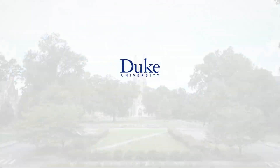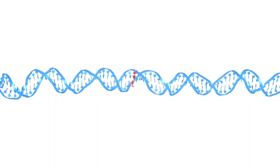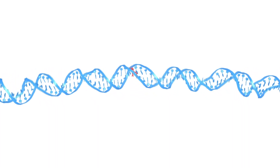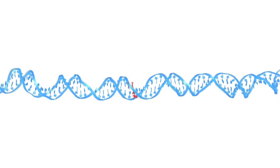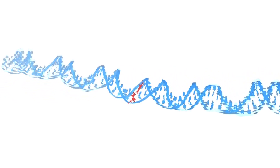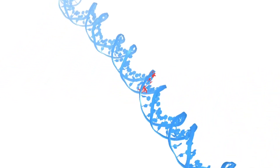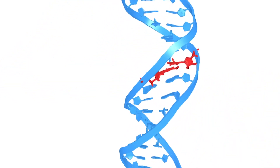This is Duke University. Duke researchers have found what they call quantum jitters in the shapes of DNA bases that may account for the spontaneous mutations driving both evolution and disease.